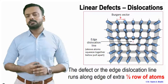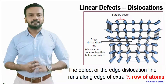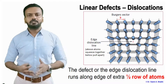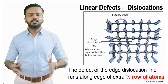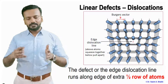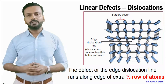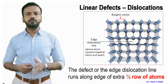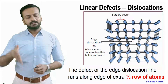This perpendicular sign is the notation for dislocation which we can show on any crystal. You can also see the Burgers vector B. In a normal crystal all the atoms are in place, but suddenly there is an extra half plane of atoms inserted, creating a sort of dislocation in the material. The defect of the edge dislocation line runs along the edge of the extra half row of atoms, and that extra half row of atoms in the crystal is the edge dislocation.